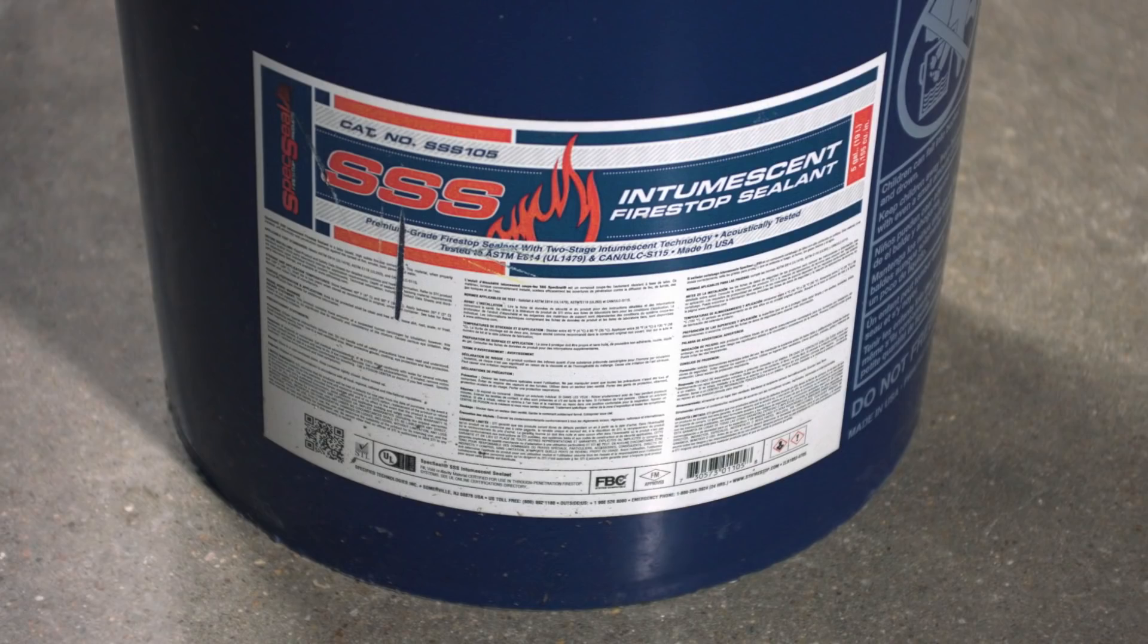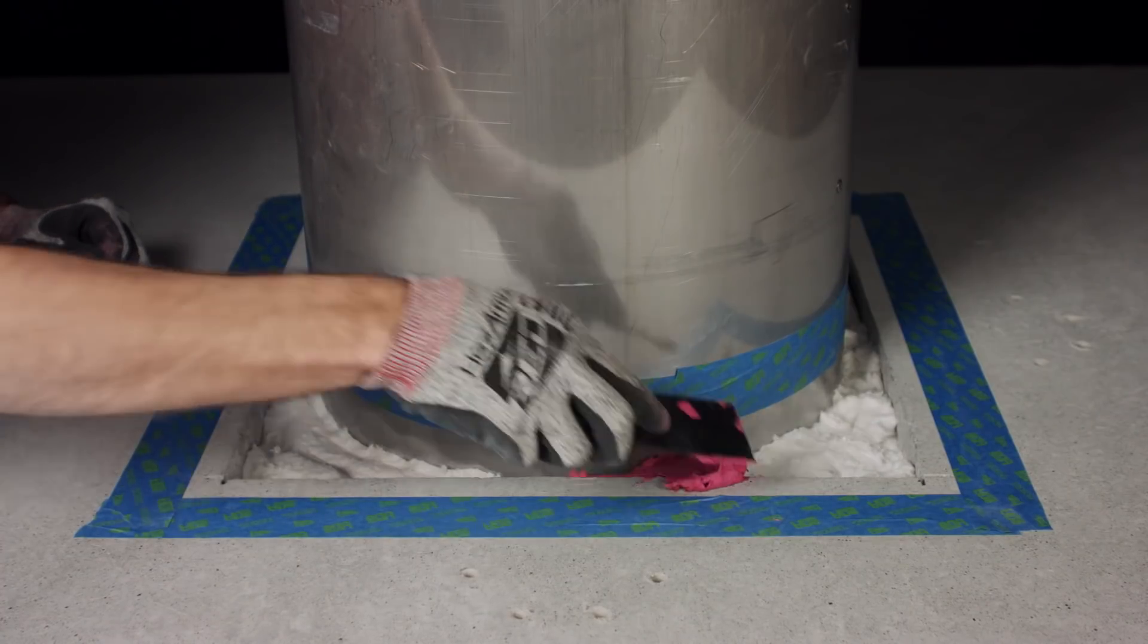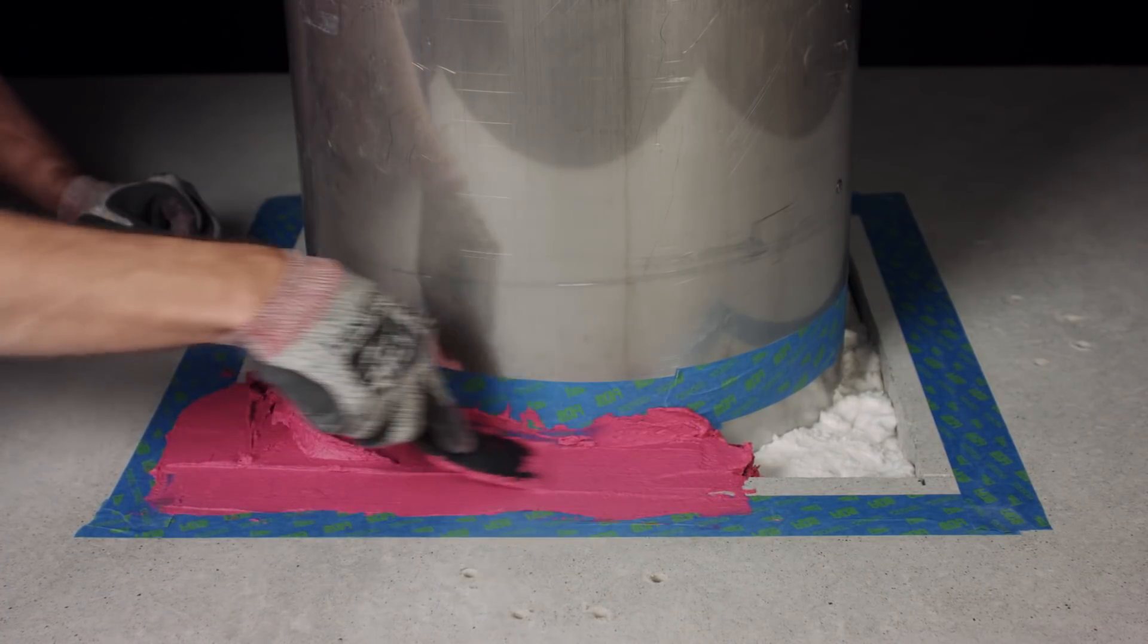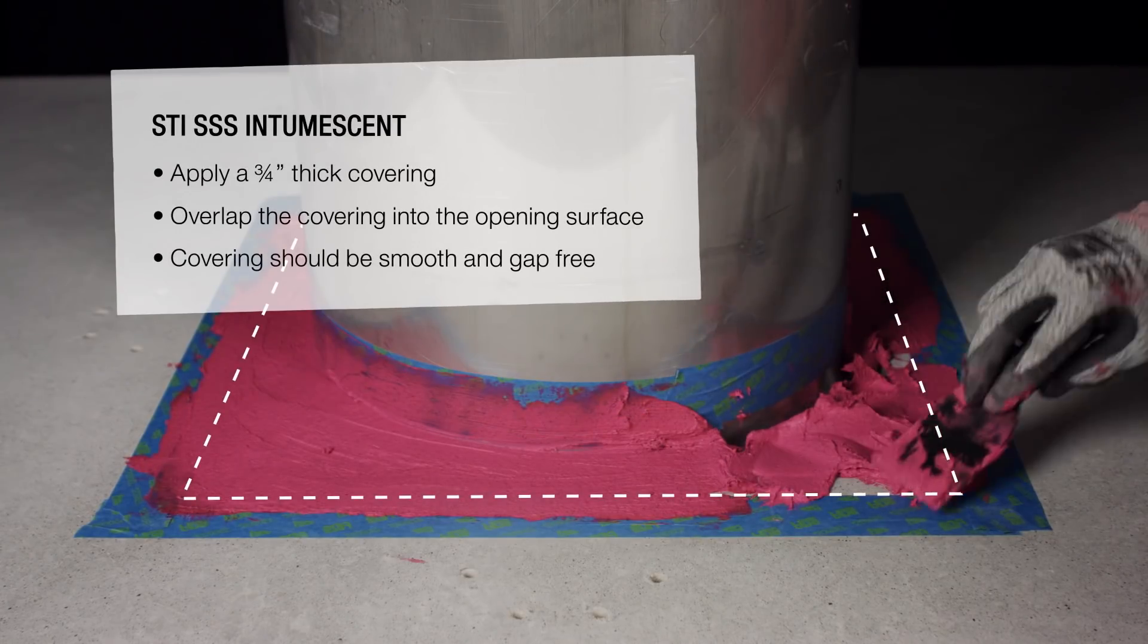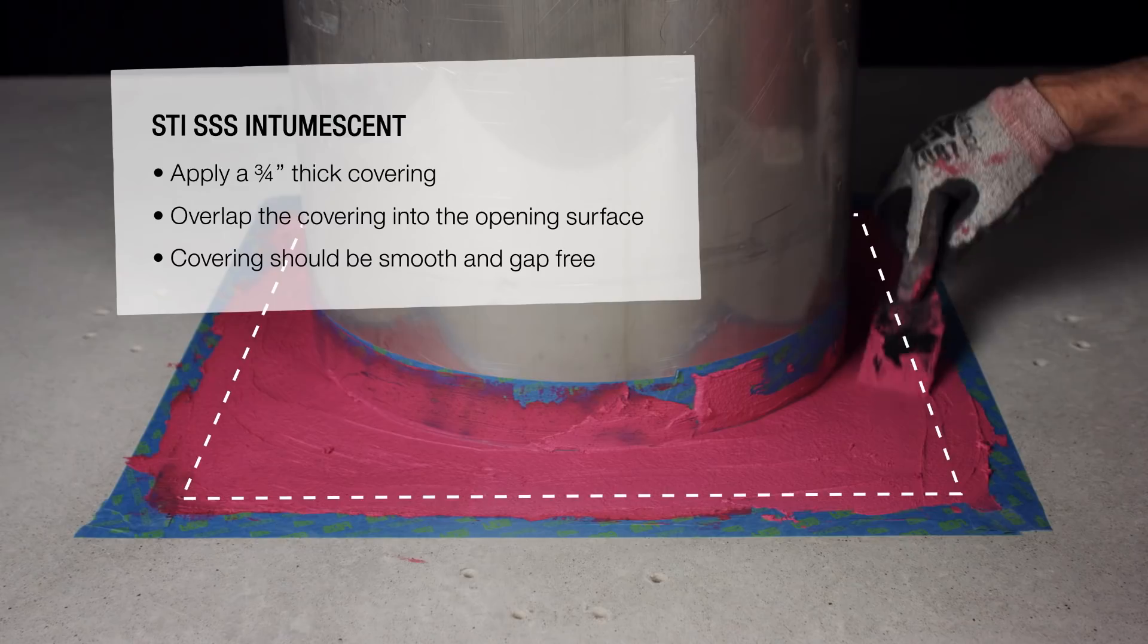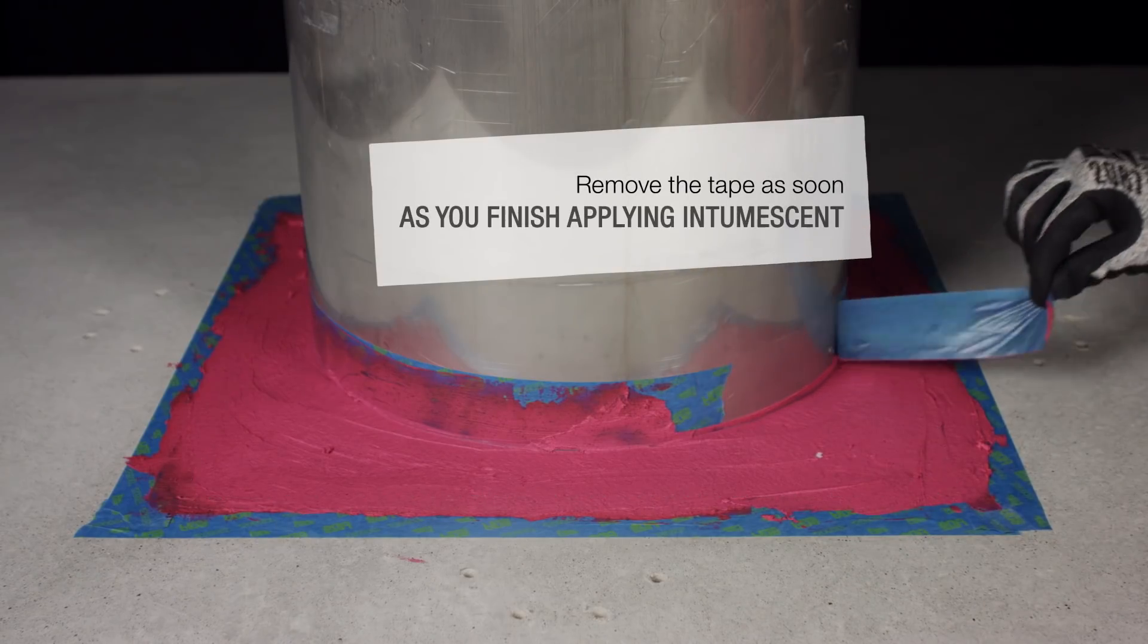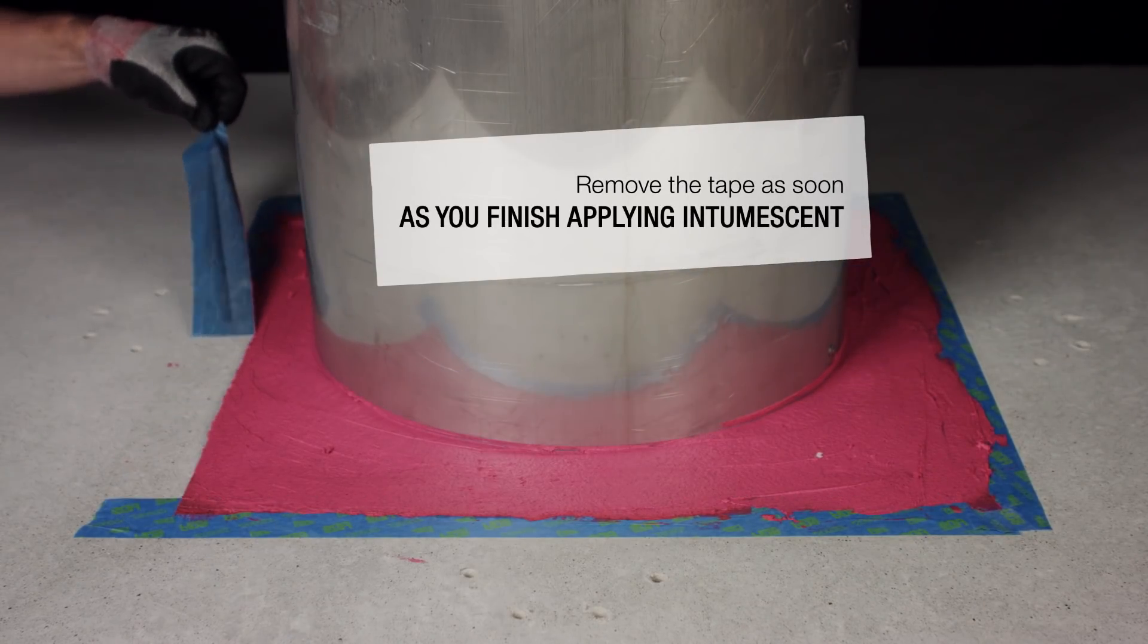Using intumescent, fill the remaining three quarter inch gap so that the surface is level with the floor. The intumescent should overlap onto the floor or ceiling, ensuring that there are no gaps between the edges of the opening or the duct's outer shell. Remove the tape as soon as you're finished applying the intumescent.